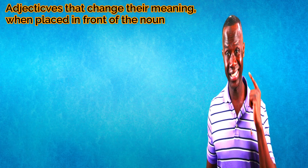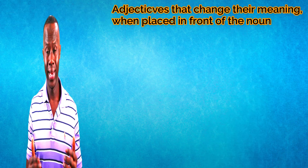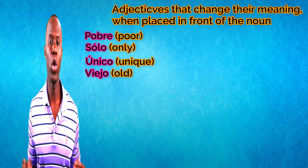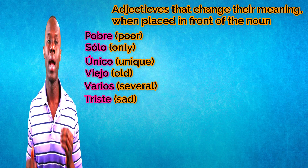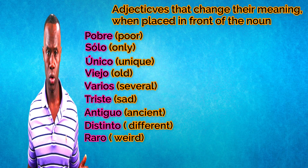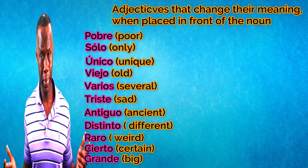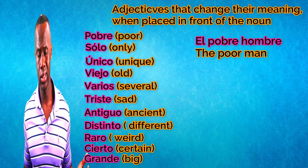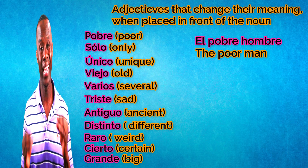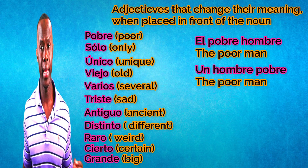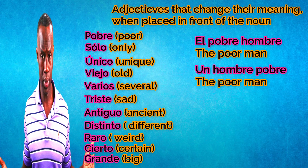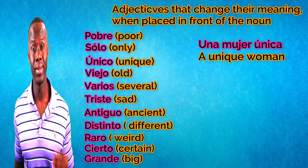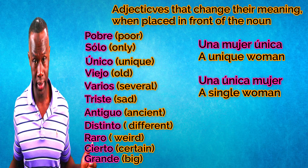Now, these are some adjectives that change their meaning when placed in front of a noun: pobre, solo, único, viejo, varios, triste, antiguo, distinto, raro, cierto, grande. Let's see some examples. 'El pobre hombre' — 'the poor man' — means unfortunate or pitiful; you feel sorry for them and it has nothing to do with money. 'Un hombre pobre' — 'a poor man' — means he doesn't have money. Also, 'una mujer única' means 'a unique woman' — she's one of a kind. And 'una única mujer' means 'a single woman.'